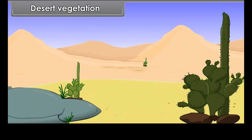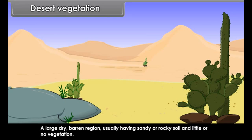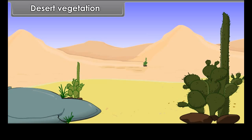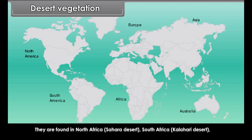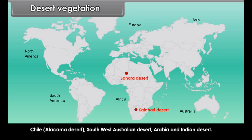Desert Vegetation. A large, dry, barren region usually having sandy or rocky soil and little or no vegetation. Tropical deserts have developed on the western margins of the continents. They are found in North Africa (Sahara Desert), South Africa (Kalahari Desert), Chile (Atacama Desert), Southwest Australian Desert, Arabia and the Indian Desert.